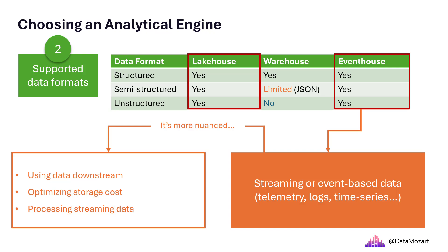Optimizing storage cost: generally speaking, storage is more expensive for event house than for lake house, since event house uses one lake cache storage for providing the fastest query response times at an additional cost. Processing streaming data: event house is optimized for processing streaming data, where indexing and partitioning happen automatically. While processing streaming data using a lake house will force the creation of multiple small parquet files that must be vacuumed and optimized later, which can lead to increased capacity unit consumption.